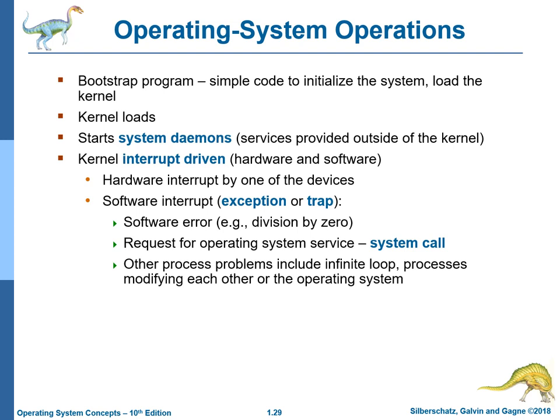Bootstrap program: simple code to initialize the system, load the kernel, start system daemons — services provided outside of the kernel. The kernel is interrupt-driven by both hardware and software. Hardware interrupts are triggered by one of the devices. Software interrupts include exceptions or traps caused by software errors, for example division by zero, or requests for operating system service via a system call. Other process problems include infinite loops, processes modifying each other, or the operating system.